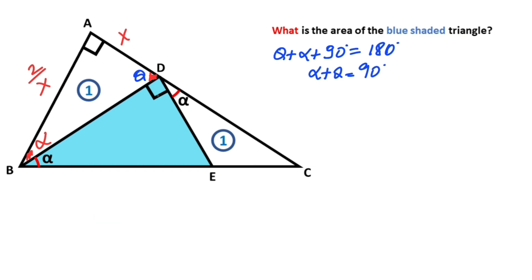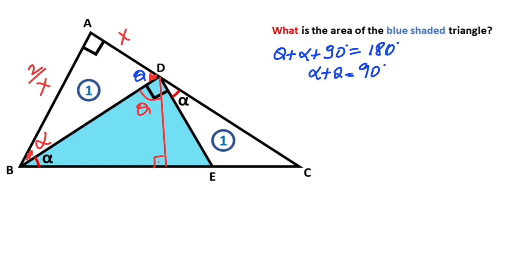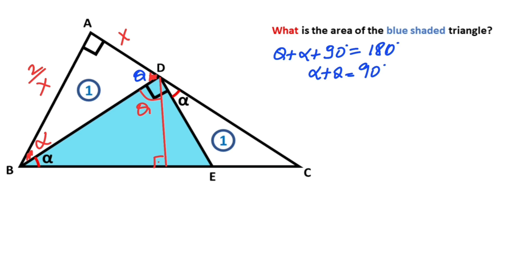To calculate the value of the triangle we need a height, so let's draw a perpendicular like this. If you focus on this triangle, notice that here is alpha, which means here must equal theta. Therefore we get two congruent triangles — notice that these two triangles have the same angles.